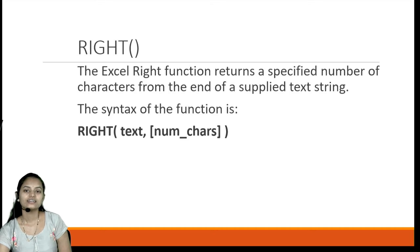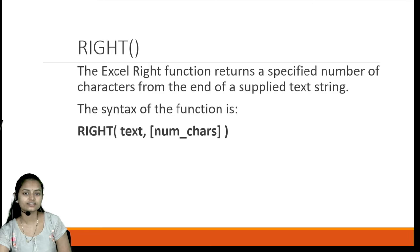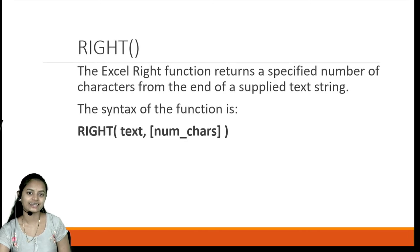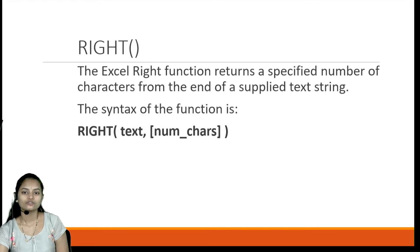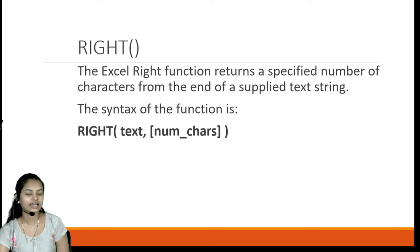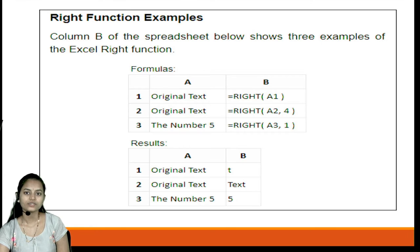Next is the RIGHT function. This RIGHT function returns a specified number of characters from the end of a supplied text string — that means it reads the string from the right-hand side. The syntax is RIGHT with two parameters: text and num_chars, where num_chars is an optional argument.